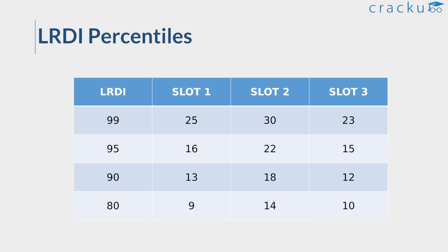These are the percentiles in the LRDI section with corresponding raw scores. For a raw score of 25 in Slot 1, the percentile is 99. To get 99 percentile in Slot 2, you need at least 30 marks, and in Slot 3 you need around 23. For 95 percentile: 16 marks in Slot 1, 22 in Slot 2, and around 15 in Slot 3. For 80 percentile: around 9 in Slot 1, 14 in Slot 2, and 10 in Slot 3. Slot 3 LRDI was tougher, and Slot 2 was easier compared to the other two slots.